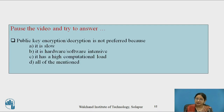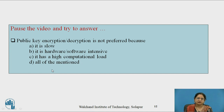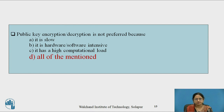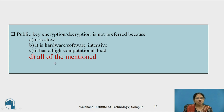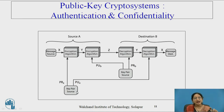Please pause the video and try to answer the question: public key encryption or decryption is not preferred — why? Is it slow? Is it hardware or software sensitive? Does it have a high computational load, or all of these reasons? Public key encryption and decryption is not preferred because it is slow, it is hardware and software intensive, and it has a high computational load. All of these are disadvantages of public key cryptography. However, authentication and confidentiality can still be achieved because of the public key cryptosystem.